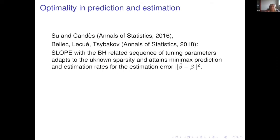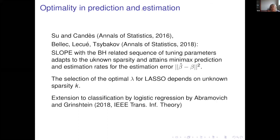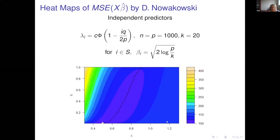This FDR control comes with optimality properties in prediction and estimation. In this respect SLOPE is better than LASSO, because LASSO can also be optimal but requires tuning lambda to the unknown sparsity. SLOPE adapts to unknown sparsity and is asymptotically optimal for this lambda sequence. There are also extensions to classification by logistic regression.